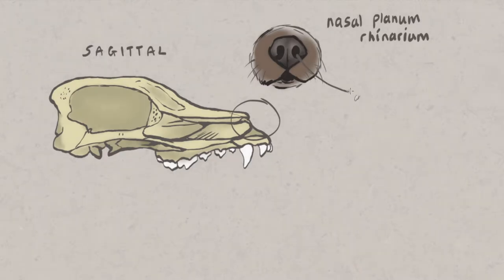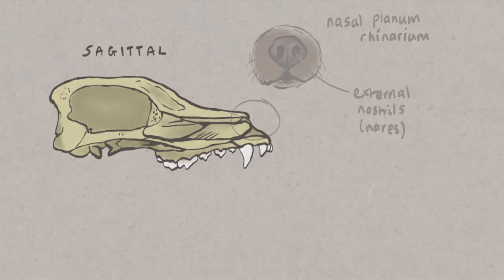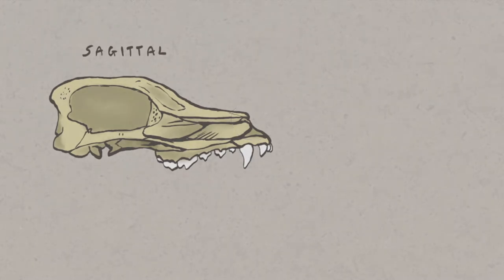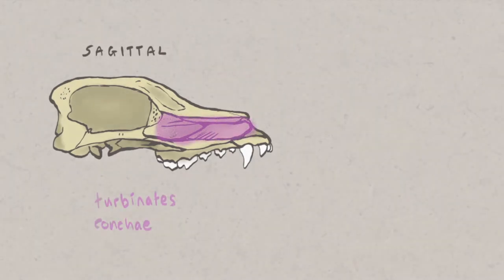Air enters into the nasal chambers through the external nostrils or nares. Within the nasal chambers are scrolls of bone called turbinates or conchi. The turbinates are covered in ciliated mucus epithelium and have a rich blood supply.